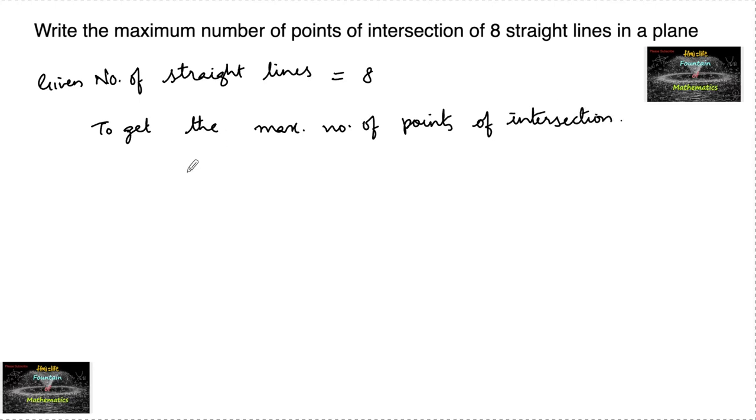Two straight lines may intersect at only one point. Then in such a case, we will get maximum number of points of intersection.